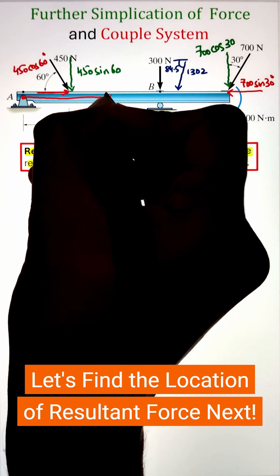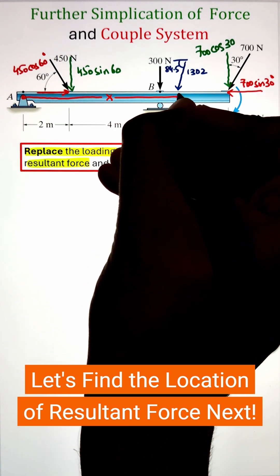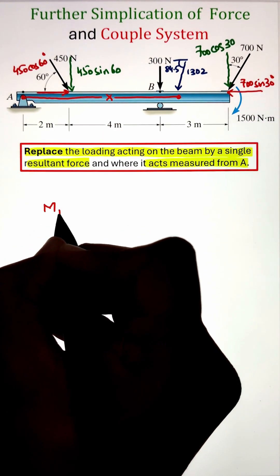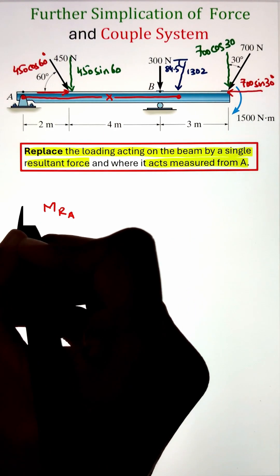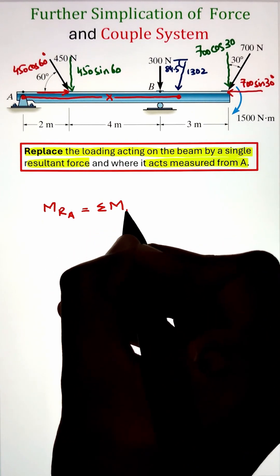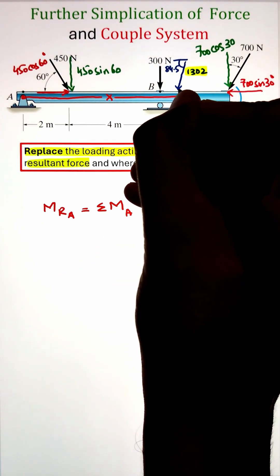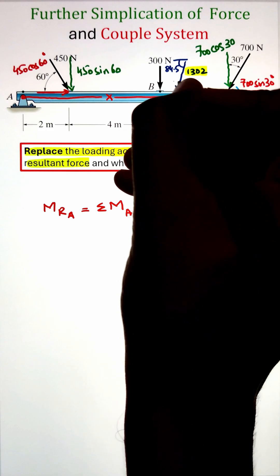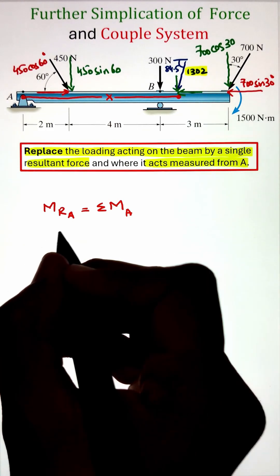To calculate this x value we can utilize our moment at point A of the resultant force and equate it to the summation of moment by all the individual forces. So in this case our resultant force y component is only going to create the moment about the A point, whereas the x component is not going to create any moment since it's passing along the line.